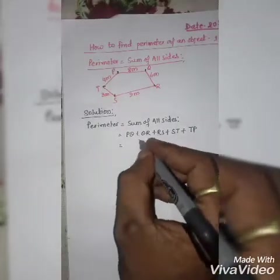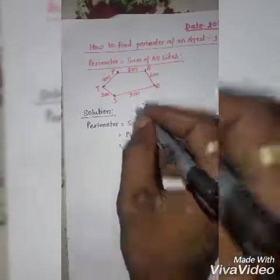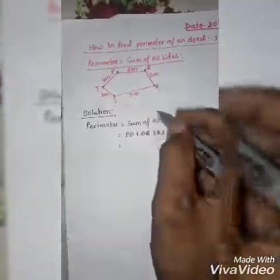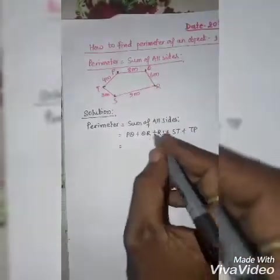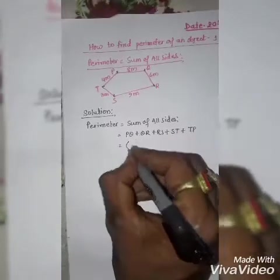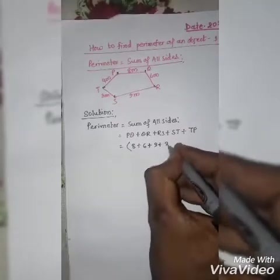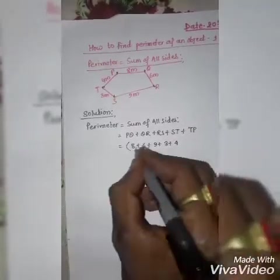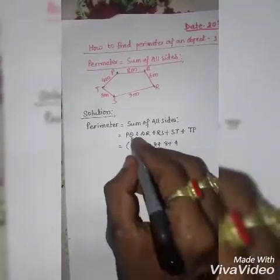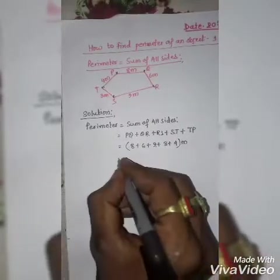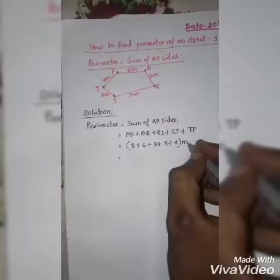Now put the value of each sides. But because in all sides meter is written, so it is not necessary to write the meter after every number. So you can write like create a bracket: 8 plus 6 plus 9 plus 3 plus 4, and close the bracket, at last write meter. Because you are adding this, so that the meter will be same.